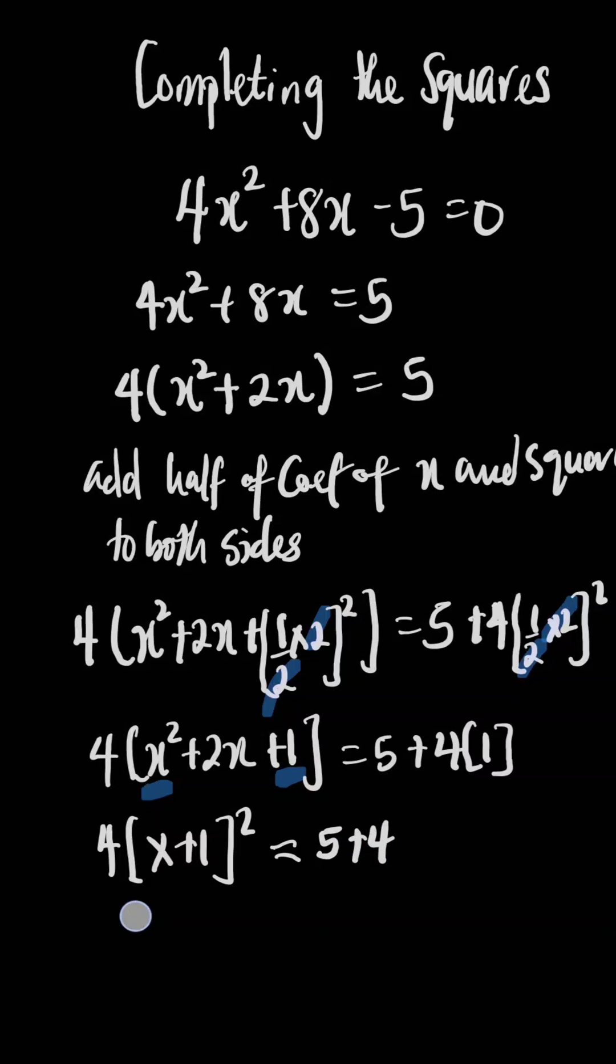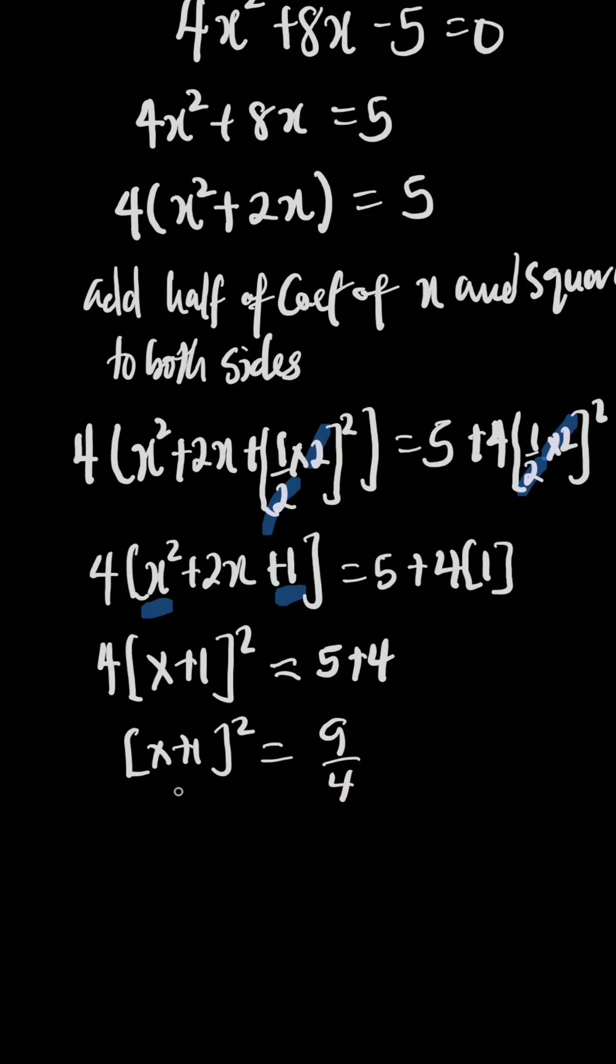So, now we have (x + 1)² = 9/4. By dividing both sides by coefficient, which is 4.